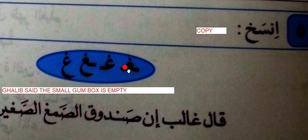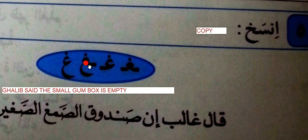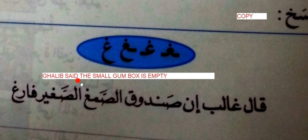Now insakh — copy. This is practice for the ghayn letter. The ghayn has different forms: this form is used when starting a word with ghayn; this form is used in the middle of a word; and this form is used when finishing a word. This is the ghayn as it appears in the alphabet. The sentence to copy: qala Ghalib — Ghalib said — al-sunduq al-saghir al-samagh farigh — the small gum box is empty.